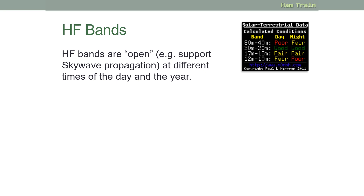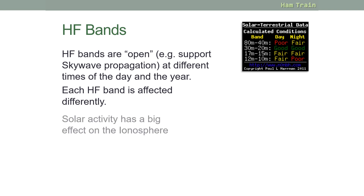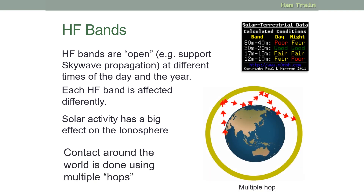Let's take a look at the various HF bands. HF bands are said to be open — in other words, they can support sky wave propagation — at different times of the day and year. Pictured here on the right is one of the many band condition checkers you can find online, showing conditions for the various bands: poor, fair, good, etc. Each HF band is affected differently, and solar activity has a big effect on the ionosphere. To make contacts around the world, you typically use multiple hops, where the signal is sent into the ionosphere, refracted back to the surface, back up to the ionosphere, and so on.